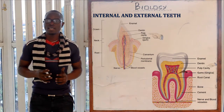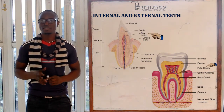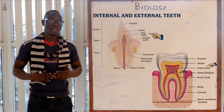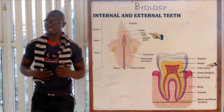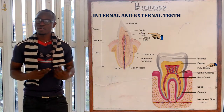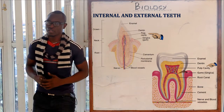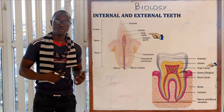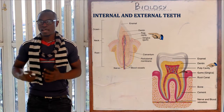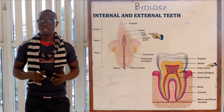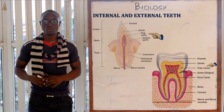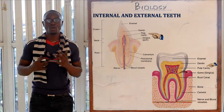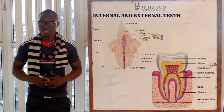The next part is the pulp cavity. The pulp cavity mainly contains blood vessels and nerve endings. The blood vessels supply the teeth with essential nutrients, while the nerve endings detect and help respond to stimuli of coldness or hotness of a substance.